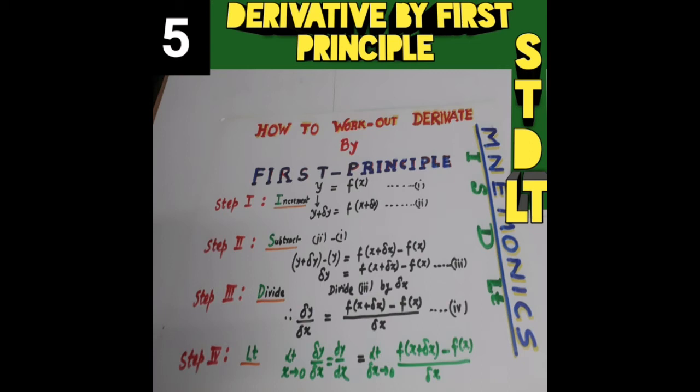Increment X, it becomes X plus delta X. Increment Y, it becomes Y plus delta Y. After that, S stands for Subtract — subtract the first from the second. You will get: delta Y equals F(X plus delta X) minus F(X).